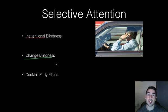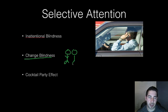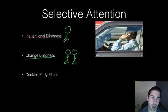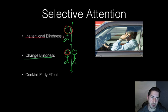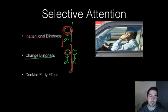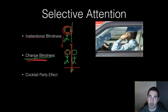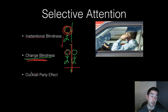Change blindness occurs when we don't notice a change in our environment. The classic example your teacher will probably show you: two people are talking, one asking for directions. Then somebody rudely cuts between them with a big board, and as they walk through, the person asking for directions switches spots with someone else. A good percentage of the time, the person giving directions doesn't realize they're now talking to somebody new — that's change blindness. We do this all the time watching movies; something might have changed or the filmmakers made a mistake and we don't notice it because we're not paying attention.